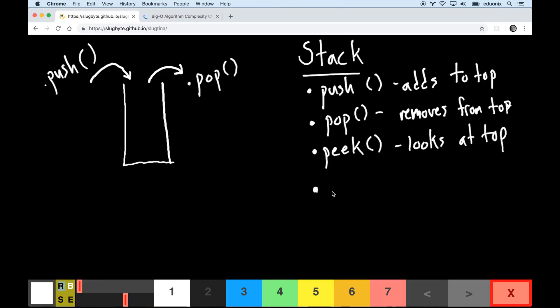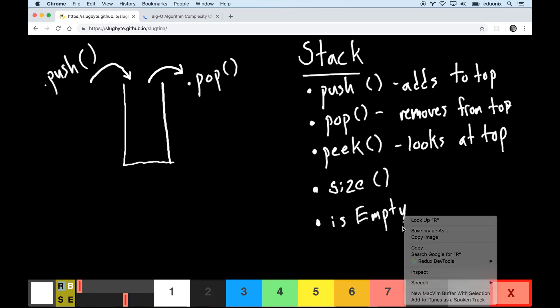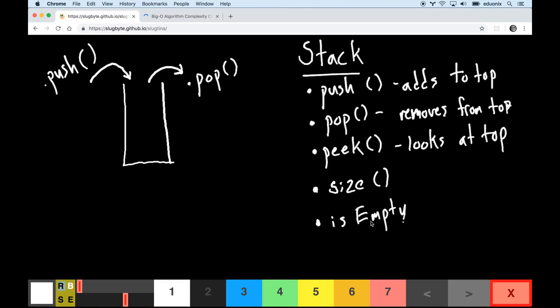And we might have a method that says the size and why not have something that says is empty. So a stack has all these methods and it has really fast O(1) constant time for the push and the pop and for the peek and for keeping track of the size.